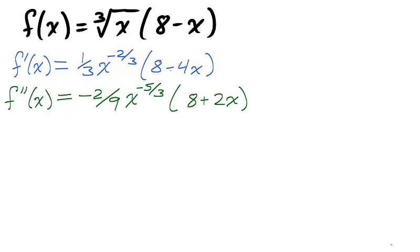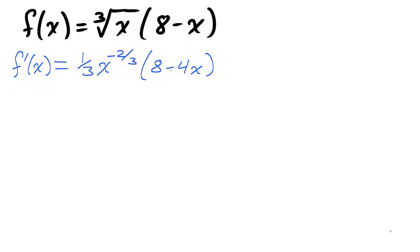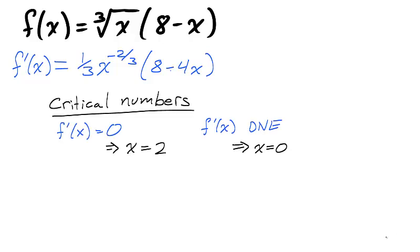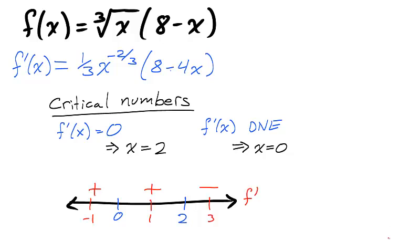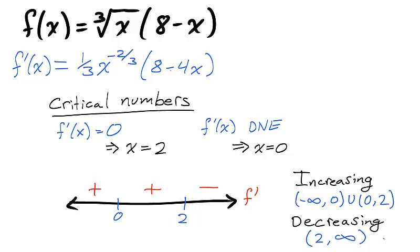Let us conclude by using the techniques from the first video of the section on the function f; the second derivative is not needed for these techniques. We take the critical number x = 2, where the first derivative is zero, and the critical number x = 0, where the first derivative does not exist, and divide the domain into intervals with endpoints 0 and 2. Using test points −1, 1, and 3, we find that f is increasing on (−∞, 0) and (0, 2), and decreasing on (2, ∞). Since f goes from increasing to decreasing at x = 2, that is a local maximum. At x = 0, f goes from increasing to increasing, so x = 0 is not a local extremum.